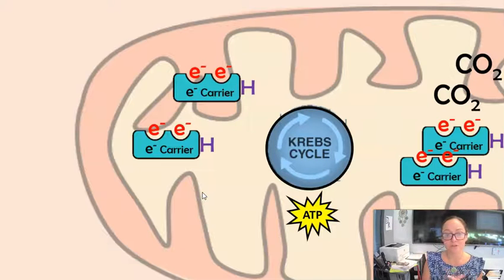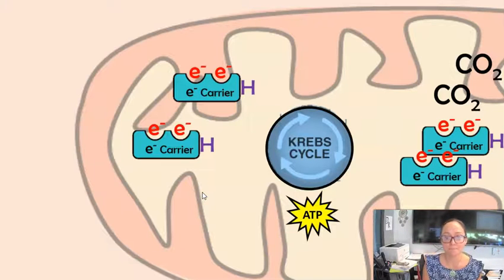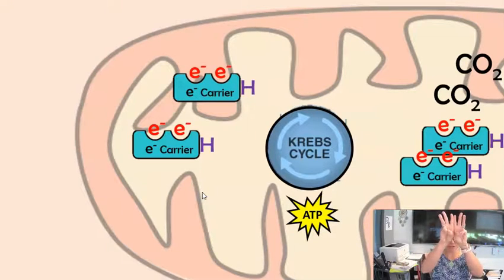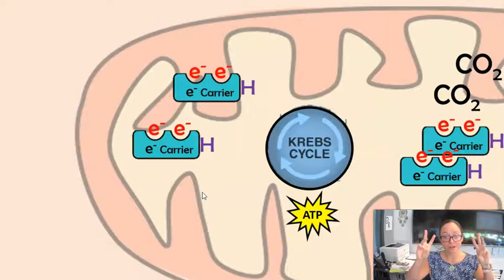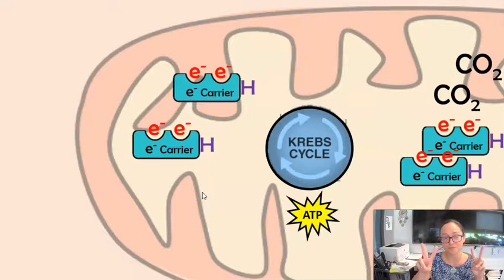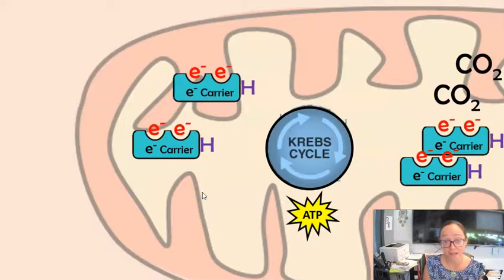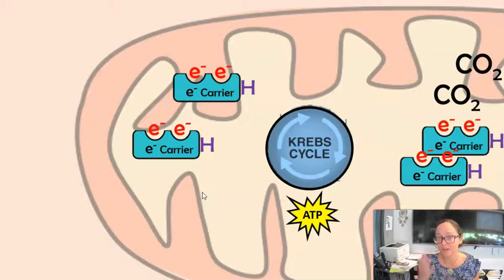This is all for one turn of the Krebs cycle from one acetyl-CoA. When you start with your six-carbon glucose broken into two pyruvates, each pyruvate breaks off a carbon dioxide, leaving a two-carbon acetyl. For each glucose, we have two acetyls, so for every glucose you'll have two turns of the Krebs cycle. Per glucose, you get eight reduced electron carriers, two ATP, and four carbon dioxides.